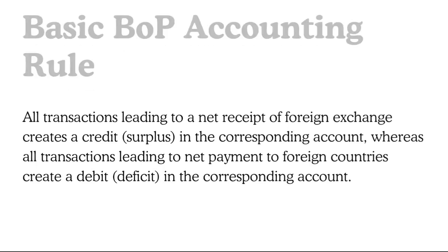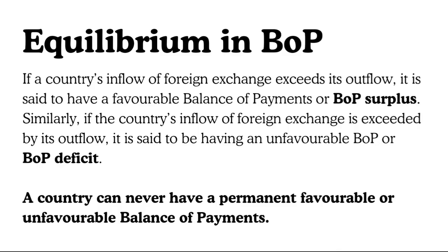Now that we know what Balance of Payment means and how it works, let us understand what it means for a country's BOP to be in equilibrium — because that is what all countries aim for. A deficit is a problem. A country can have its BOP in equilibrium only when the demand for its foreign exchange reserve equals the supply of foreign exchange — that is, both inflow and outflow of foreign exchange are equal. If you are giving ten dollars outside and getting ten dollars back inside, it is in equilibrium.